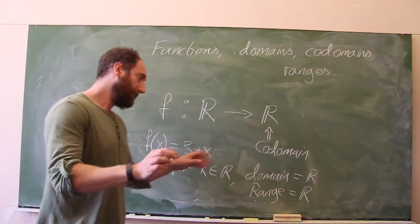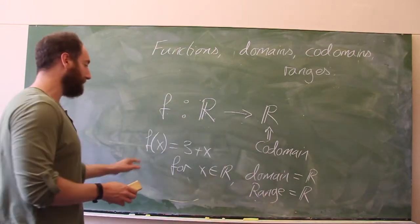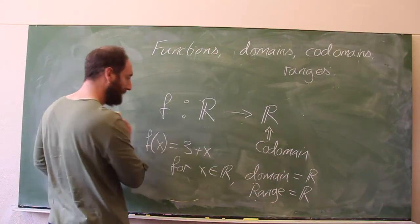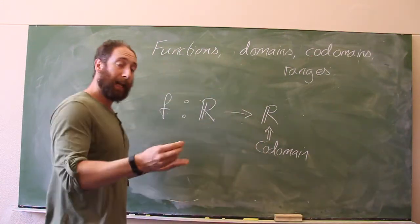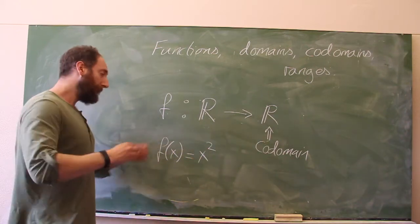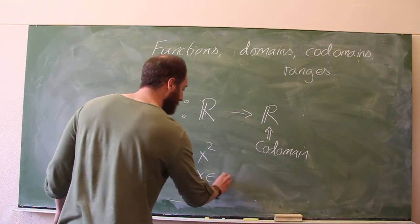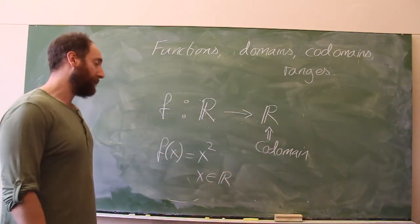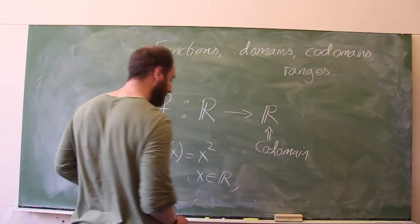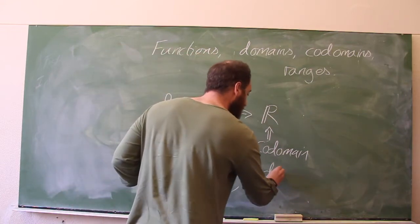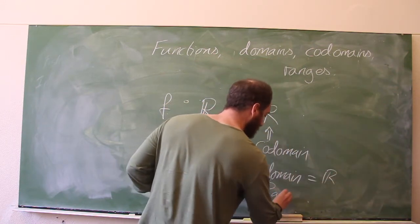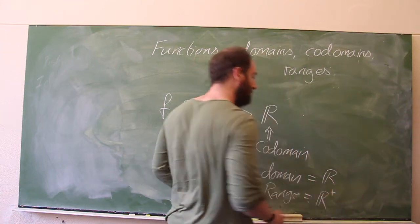Here the domain and the range are the same. How about a different function? We have the very simple linear function f(x) = 3 + x. How about we look at f(x) = x²? In this case, x can be any real number, which means the domain of this function is still the reals. But of course, this can't give us any negative numbers — it's always going to give us a positive number. So in this case, the domain is the reals and the range is the positive reals, including zero, because when you give it zero, it gives us zero.